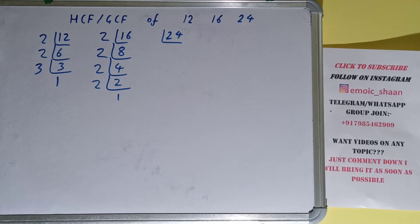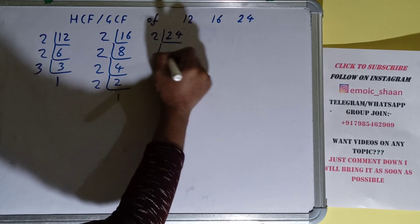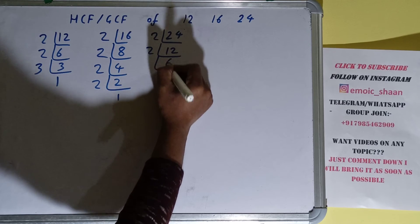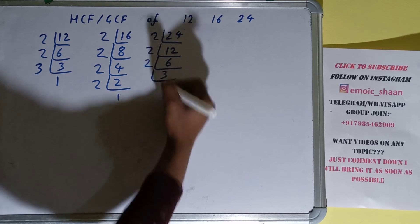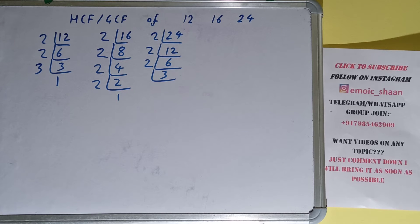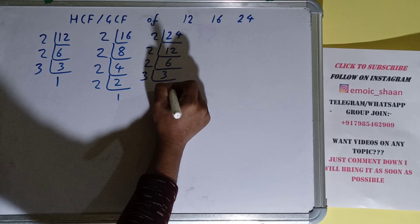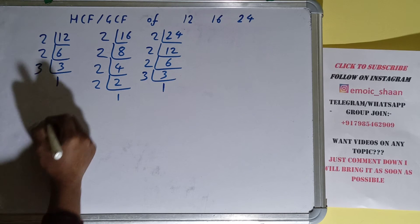Now we need to check for the number 24. Is 24 divisible by 2? Yes, giving us 12. Is 12 divisible by 2? Yes, giving us 6. Is 6 divisible by 2? Yes, giving us 3. Is 3 divisible by 2? No, because 3 is a prime number, so it is only divisible by itself, giving us 1. We are now done with the prime factorization step.